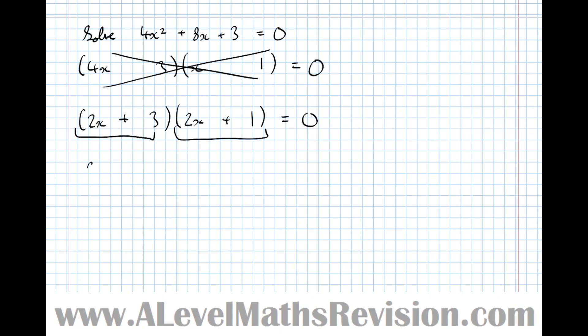So that now means that two things are multiplied together to equal 0. Either the first thing equals 0 or the second thing equals 0, which leads us to two new and easier equations to solve. 2x = -3 which means x = -3/2, or 2x = -1, so x = -1/2. There we're done, we solved it.